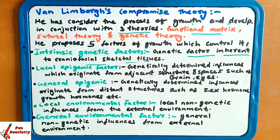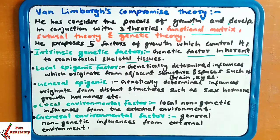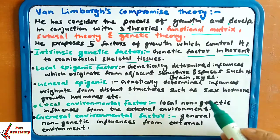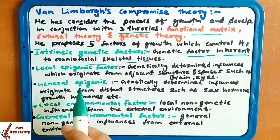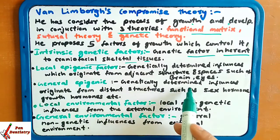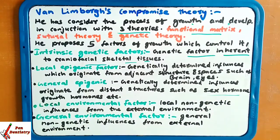The second factor is the local epigenetic factor: genetically determined influences that originate from adjacent structures and spaces, such as the brain and eye, which are genetically determined according to Van Lomborg. The third is the general epigenetic factor: genetically determined inheritance influencing growth from distinct structures such as sex hormones and growth hormones.